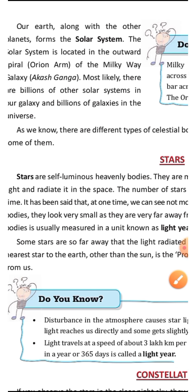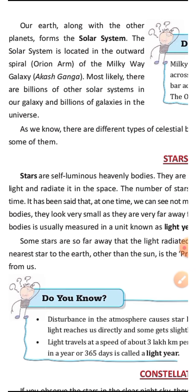Just as we have our solar system, there are billions of other solar systems in our galaxy, and billions of galaxies in the universe — the universe is so vast that there are countless galaxies in it. So as we know, there are different types of celestial bodies in the universe. We will discuss other things one by one. That's all about galaxies.